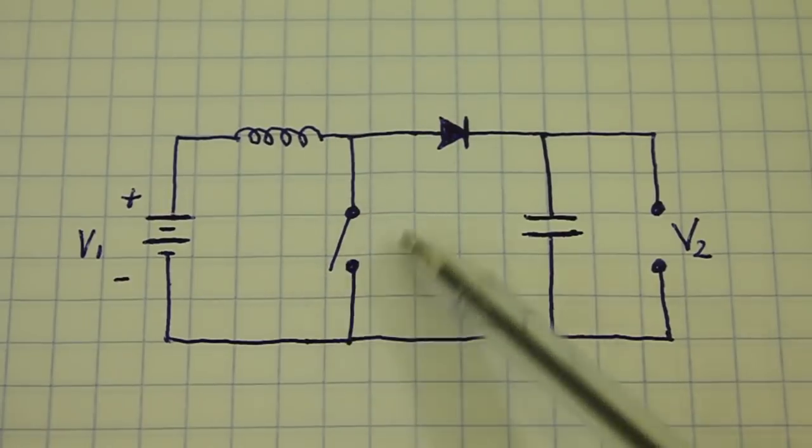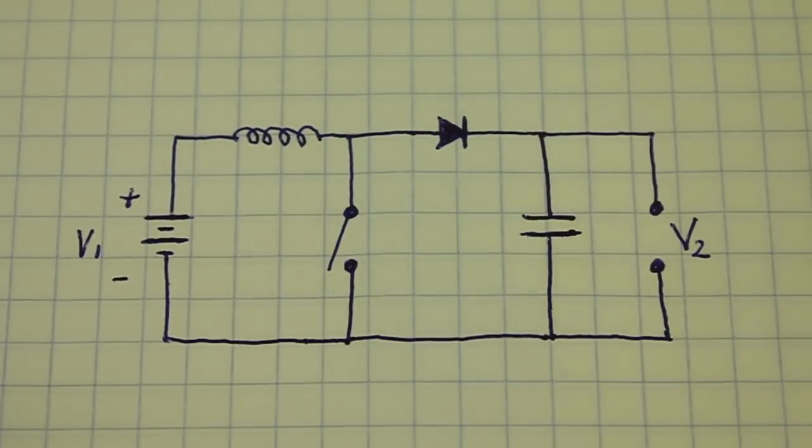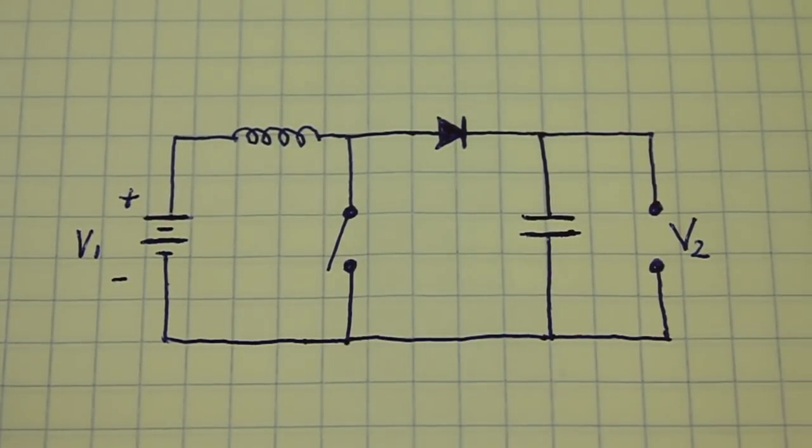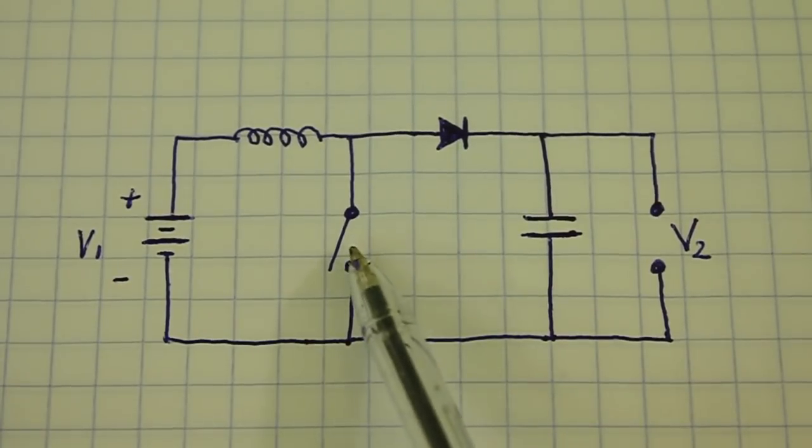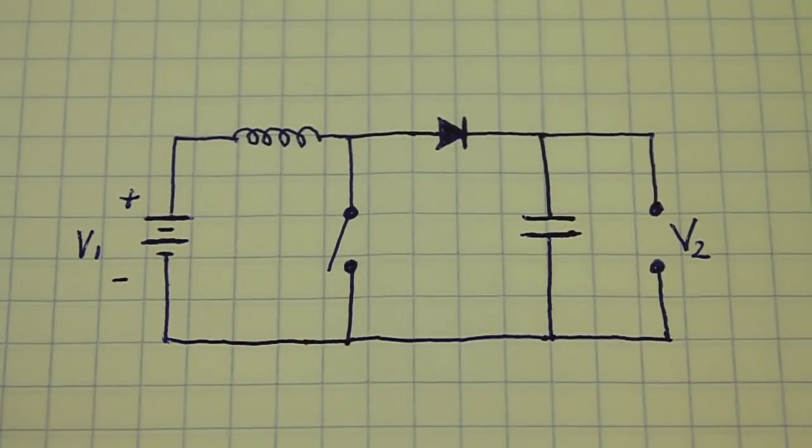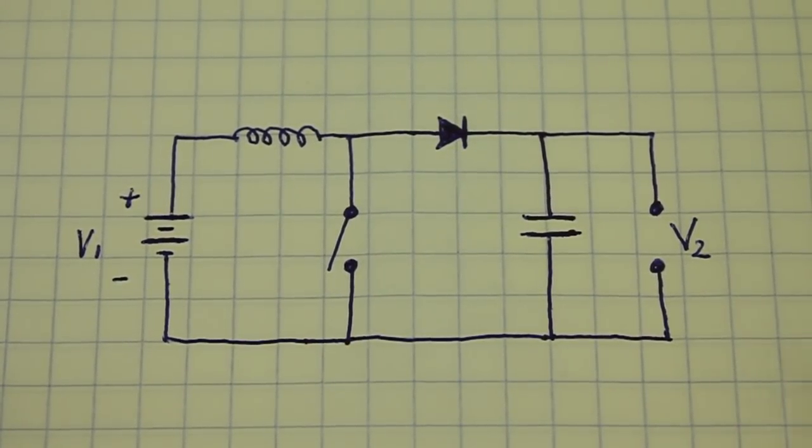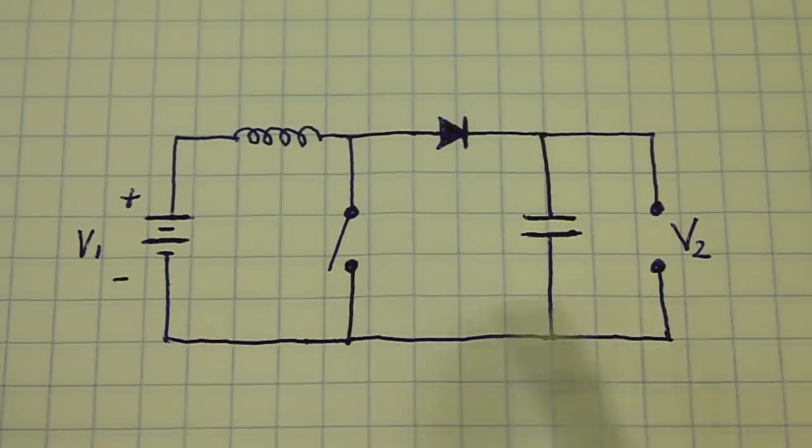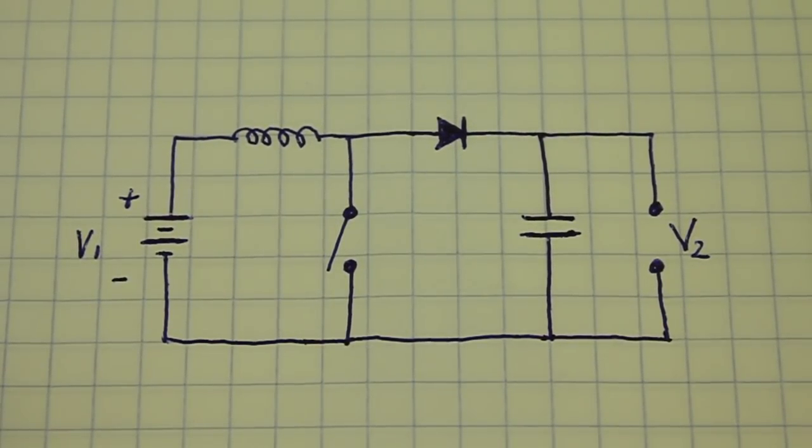The commutation that we do here with the switch can be done manually, that is, using a mechanical switch. Of course, this is not efficient. I have a video on that. I will give you the link in the description of this video if you want to check it out.